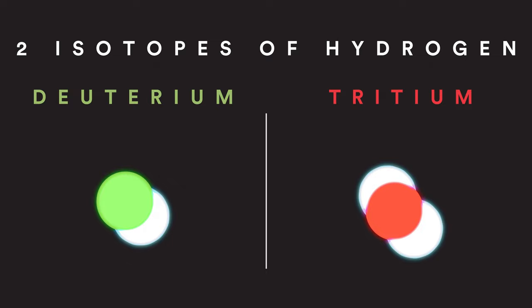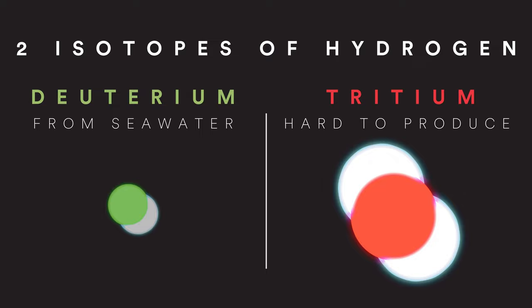Fusion has many advantages over other energy sources. One of these advantages is the abundance of fusion fuel. Like we mentioned earlier, the fusion reaction we use is between two isotopes, two types of hydrogen, which are deuterium and tritium. We can extract deuterium from seawater pretty easily. However, tritium is a bit harder to produce since it's not a stable isotope.